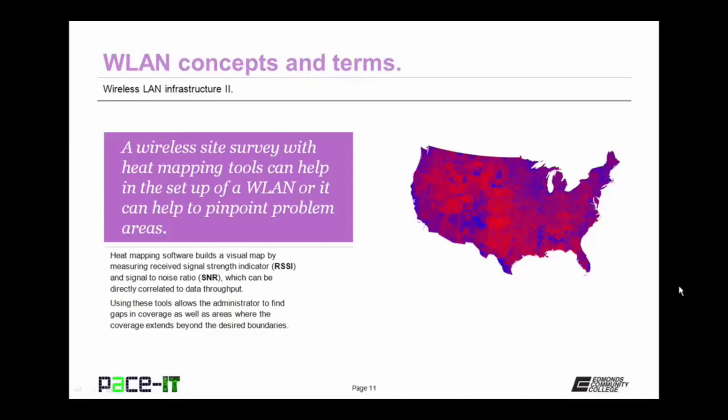The heat mapping software builds a visual map by measuring the received signal strength indicator, or RSSI, and the signal-to-noise ratio, or SNR, which can be directly correlated to data throughput. Using these tools allows the administrator to find gaps in coverage as well as areas where the coverage extends beyond the desired boundaries, helping to create a more efficient and secure network.